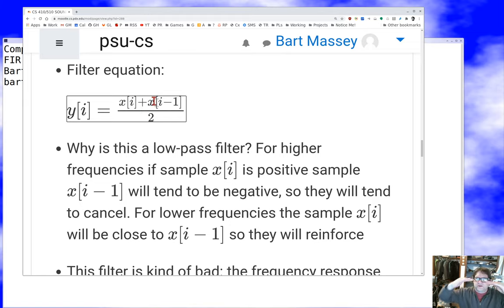Why is it a low-pass filter? Imagine we've got a low frequency. Then X sub i and X sub i minus 1, those two samples are close together, and at low frequencies they aren't going to vary very much. So they're pretty close together and the average will be pretty close to the original value. We really won't lose much of our low frequency signal.